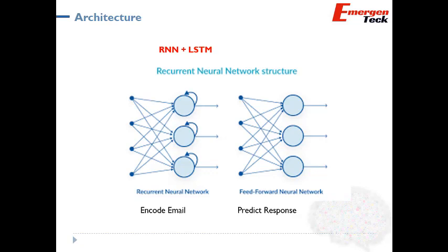The encode model consumes the words from the email one by one and encodes the entire email message, creating vectors — called thought vectors. From the diversified input, it creates a limited set of representations and tries to understand the intent. The predict response model then consumes those vectors and, based on the intent, generates the best possible responses through prediction.